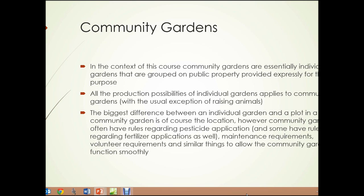Community gardens. In the context of this course, community gardens are essentially individual gardens that are grouped on public property, provided expressly for that purpose. All the production possibilities of individual gardens apply to community gardens, with the usual exception of raising animals — that's usually not something allowed in a community garden. The biggest difference between an individual garden and a plot in a community garden is, of course, just the location. However, community gardens often have rules regarding pesticide application, and some have rules regarding fertilizer applications as well. They have rules regarding maintenance requirements, volunteer requirements, and similar things to allow the community garden to function smoothly.